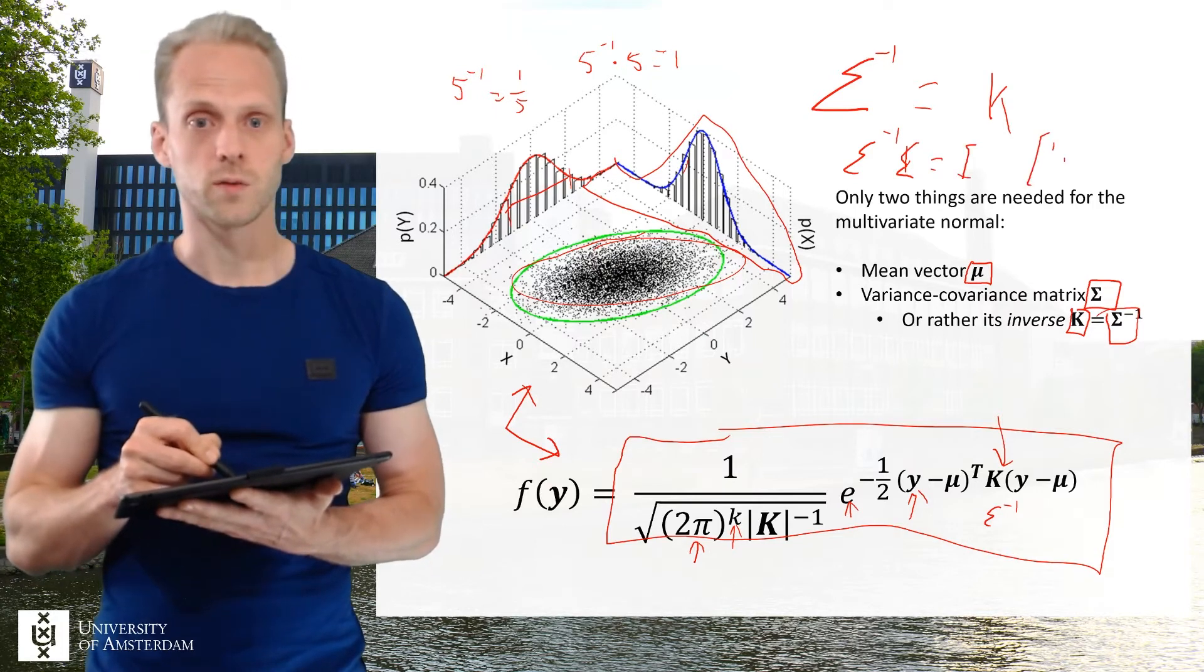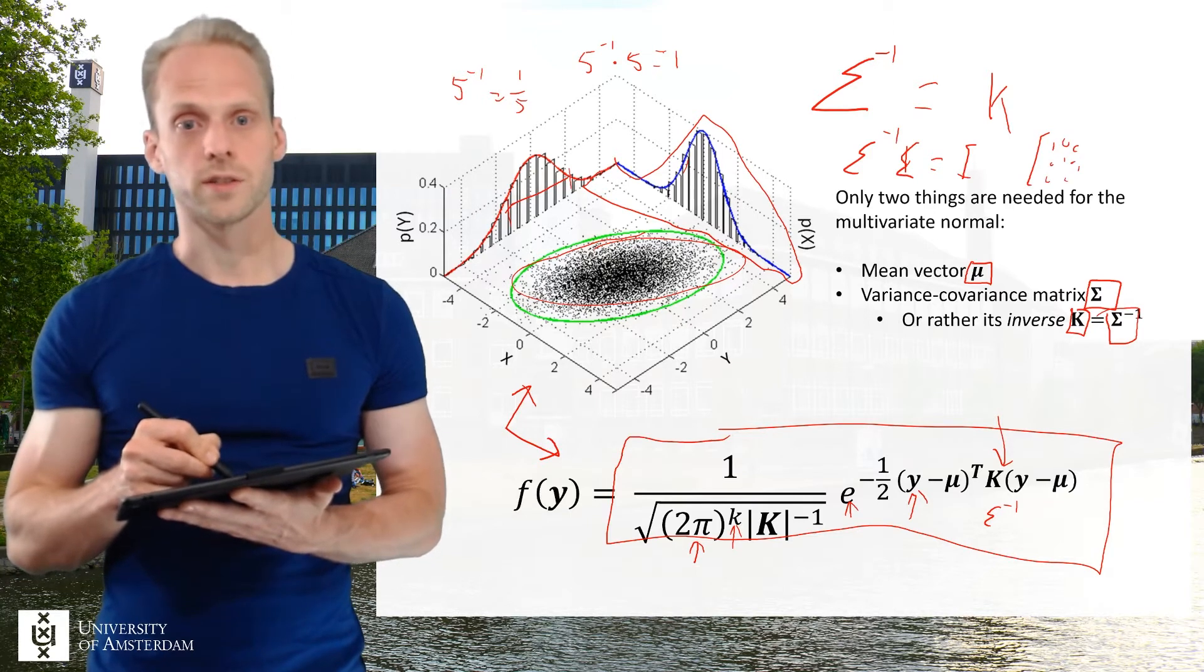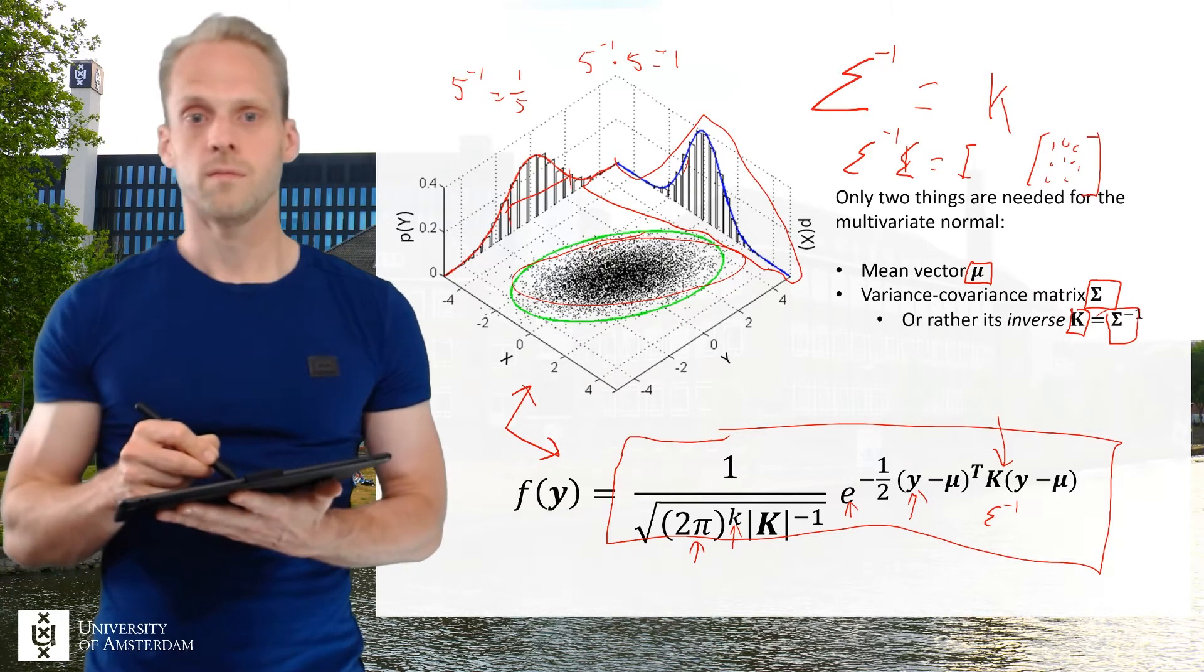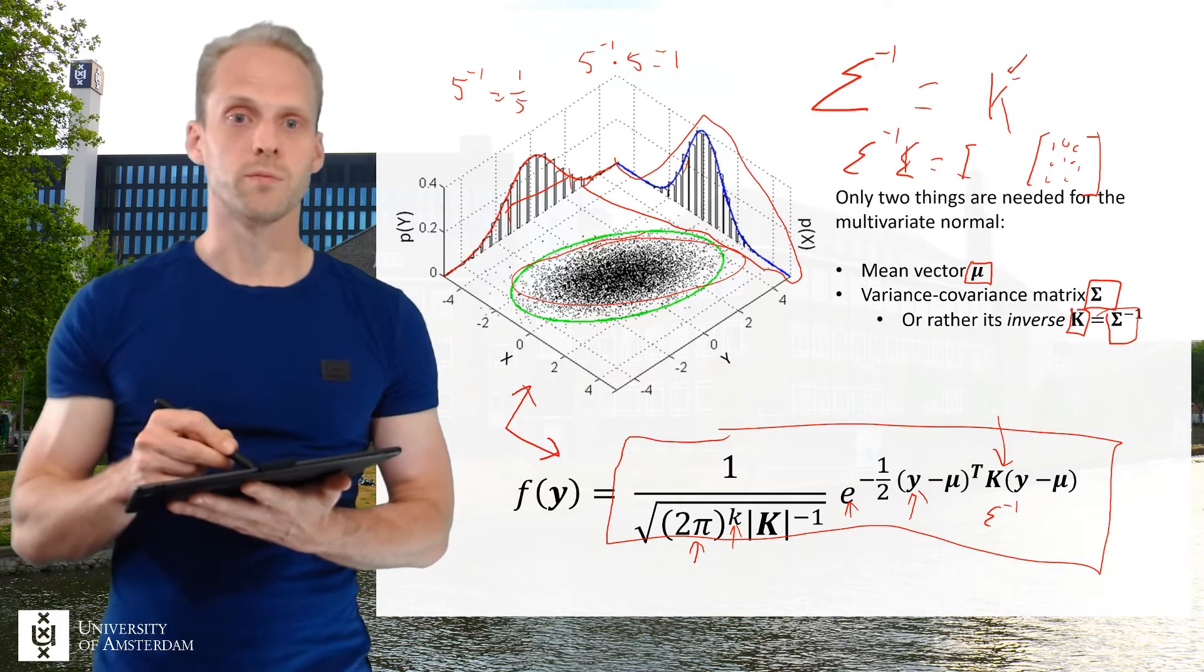So that's a matrix with ones on diagonal and zeros everywhere else. This kappa is also called a precision matrix sometimes.